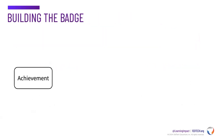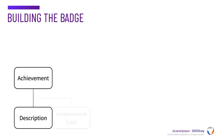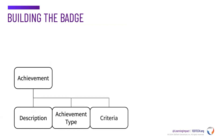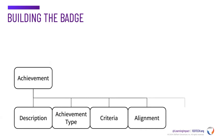The first step to setting up an OpenBadge is to define the achievement. Called a badge class in OpenBadges version 2, the achievement includes the description of the badge and the type of achievement, such as skill, competency, or other recognition. Additional data can be added, such as the criteria required for earning the badge, the alignment to skills, competency, or other published frameworks, and the assessment used to demonstrate earning the badge.